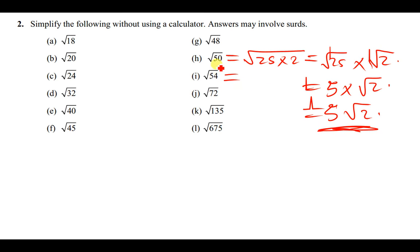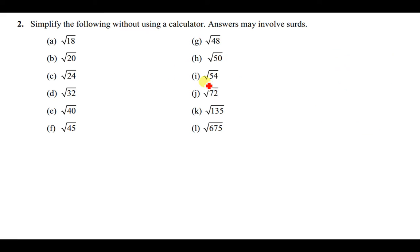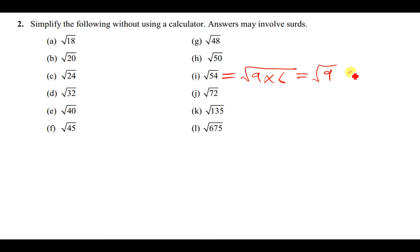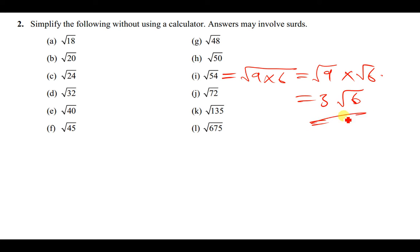For √54: which perfect square can go into 54? We know that 9 can go there 6 times. So 54 can also be written as 9 times 6, which can be written as the square root of 9 times the square root of 6. The square root of 9 is 3, so the answer is 3√6.